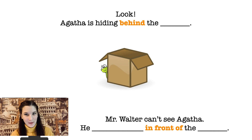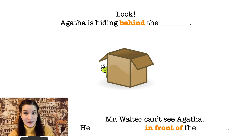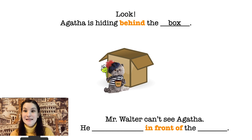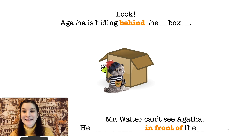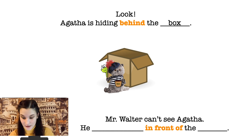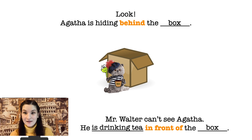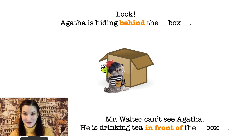It's time to talk about Agatha. Do you remember Agatha? Who is it? Agatha is a snake. Can you see Agatha in the picture? Where is she? Agatha is hiding behind the box. So this is the box and this is Agatha — behind the box. Now you can see Mr. Walter. Mr. Walter can't see Agatha. What is he doing? He is holding tea in his paw. So he is drinking tea in front of the box. So Agatha is behind the box and Mr. Walter is in front of the box. That's why he cannot see Agatha.